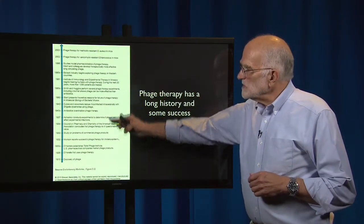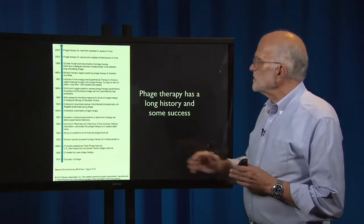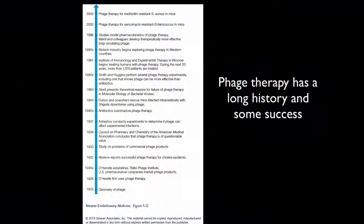Here is a timeline — it's a long timeline and a little difficult to read, but phage therapy has a long history and some success. Phage were discovered around 1915, and already in the 1920s they were being used for experimental therapy. In the 1930s there were studies of commercial phage production. However, also in the 1930s, the Council on Pharmacy and Chemistry — which had a self-interest in using chemicals rather than phage — concluded that phage therapy is of questionable value. In Eastern Europe an institute was founded to study experimental phage infections, but in the 1940s the antibiotic revolution came along and antibiotics overshadowed phage therapy.